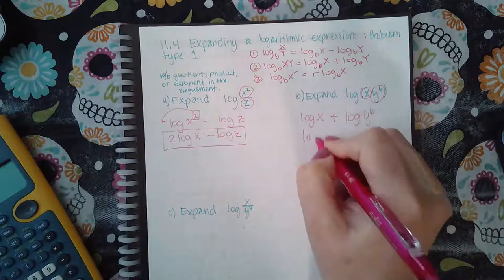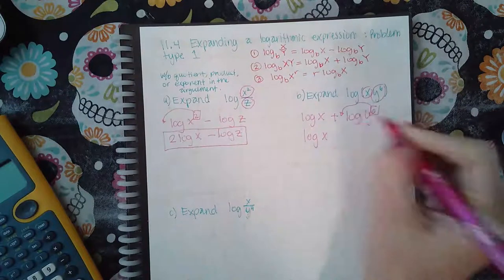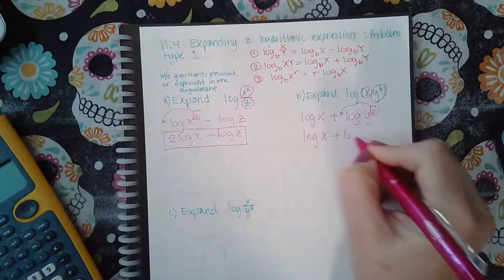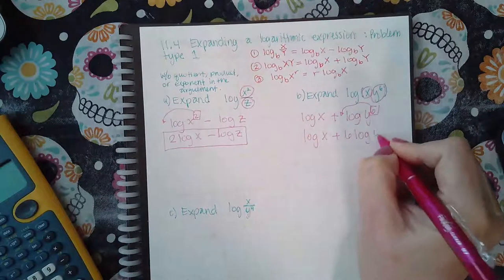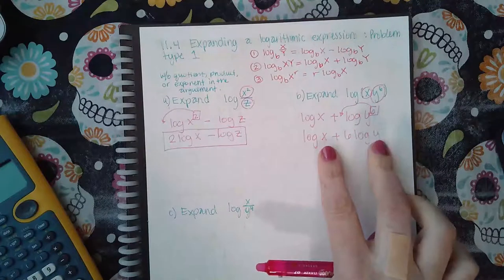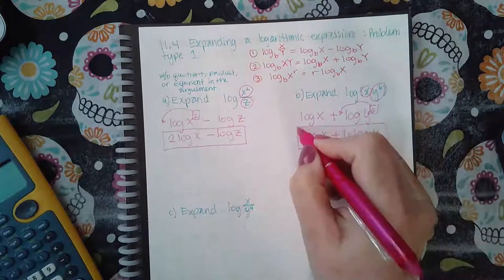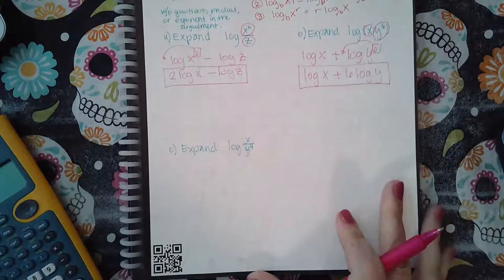And then again, I don't have any exponent here, so this one will just be repeated, but I do have an exponent here which will come to the front of that log. So it'll become plus 6 log of y. Now the arguments don't have a product, don't have a quotient, and don't have an exponent, and so this is the completed expanded form.